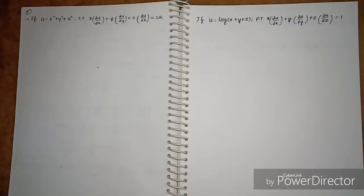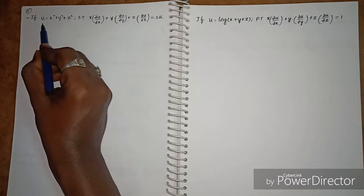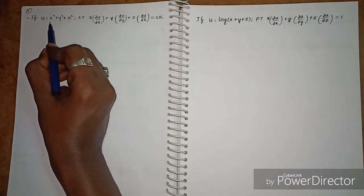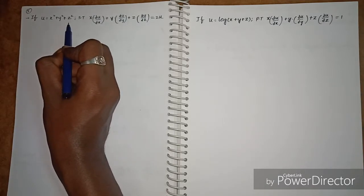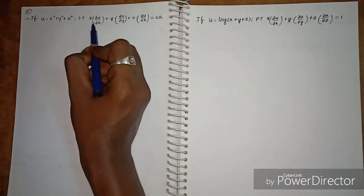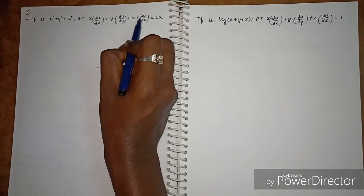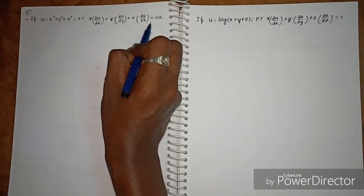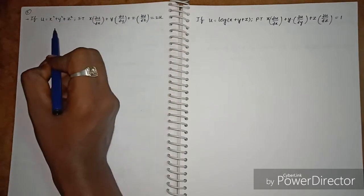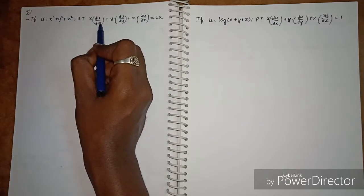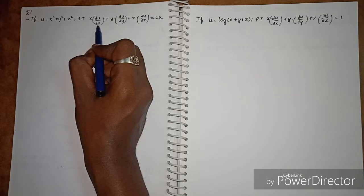Good morning friends. Today we'll discuss partial differentiation with some important questions. The first question: if u is equal to x squared plus y squared plus z squared, show that x into ∂u/∂x plus y into ∂u/∂y plus z into ∂u/∂z is equal to u. In partial derivation, we differentiate with respect to x.